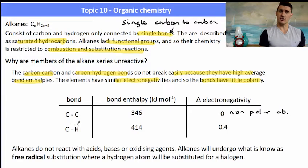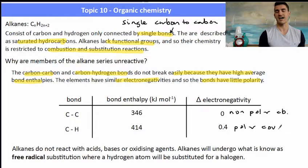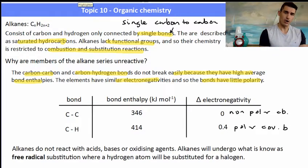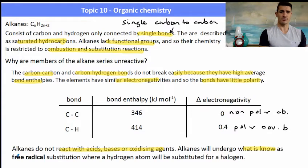The carbon-to-hydrogen bond is actually stronger than a carbon-to-carbon bond and has a slight polarity in favor of the carbon, which is slightly more electronegative than hydrogen — so it's known as a polar covalent bond. Alkanes do not react with acids, bases, or oxidizing agents.